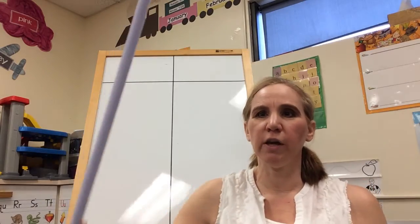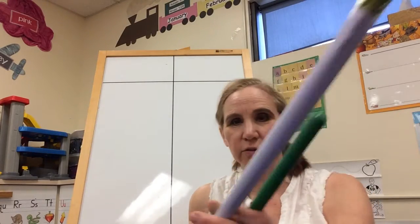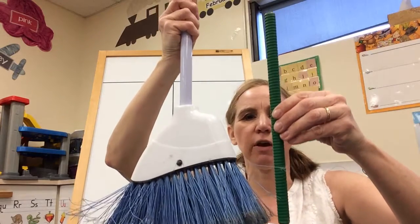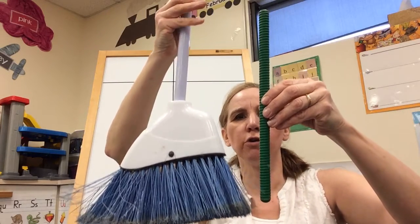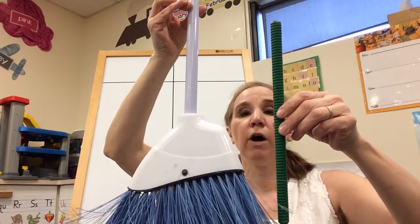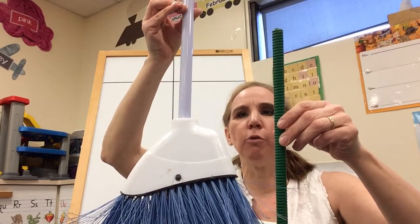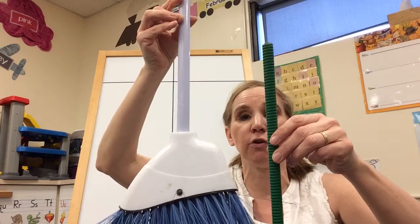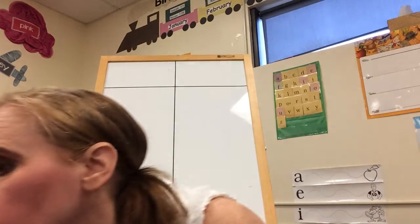It's a broom — you can't even see the whole thing, it goes all the way to there. Is the rhythm stick taller than the broom or shorter than the broom? Right, the rhythm stick is shorter than the broom. You can't even see the top of the broom, but you know it goes further. The rhythm stick is shorter than the broom.